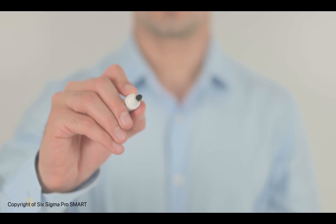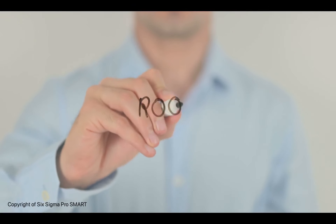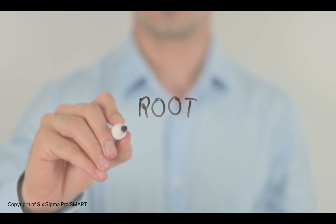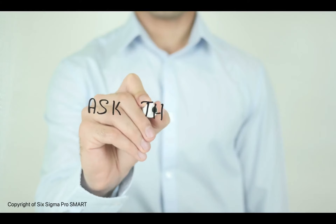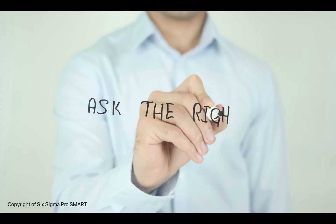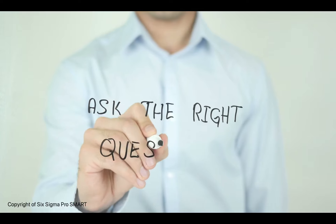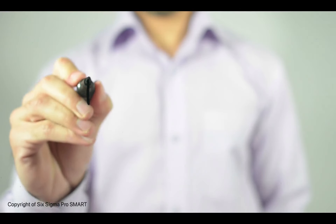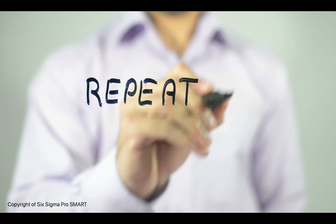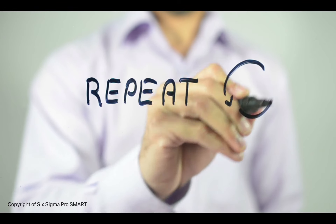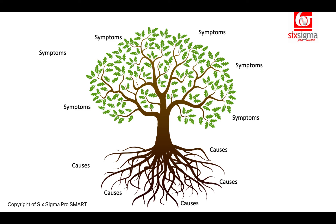The 5Y analysis is a problem-solving technique used to determine the root cause of an issue by asking 'why' five times. The process involves asking why a problem occurred, then asking why the previous answer happened, and repeating until a root cause is identified. The goal of the 5Y analysis is to uncover the underlying factors that contribute to the problem, rather than simply addressing its symptoms.